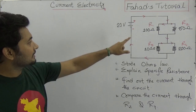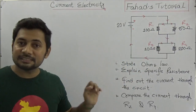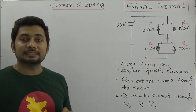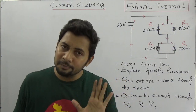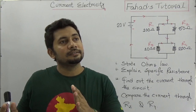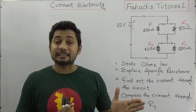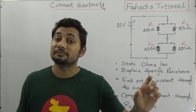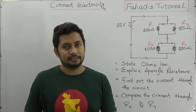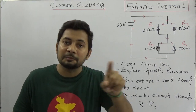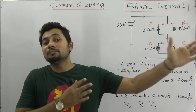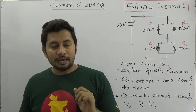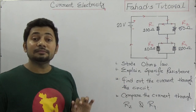In this circuit you can see four resistances are given and 20 volts is the voltage, or EMF. The first question is: state Ohm's law. The current passing through a conductor at constant temperature is directly proportional to the potential difference across the two ends of that conductor. So I is proportional to V — if there is more voltage, there is more current in the closed circuit.